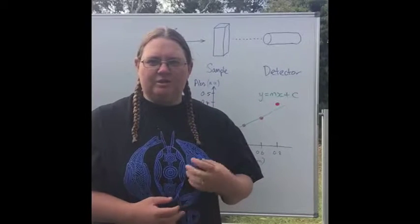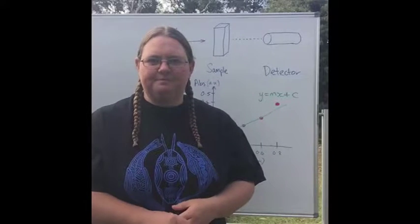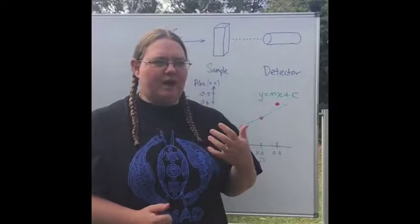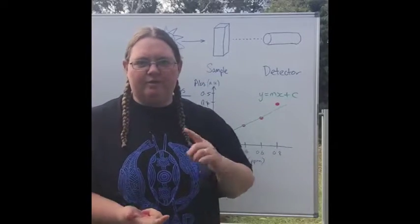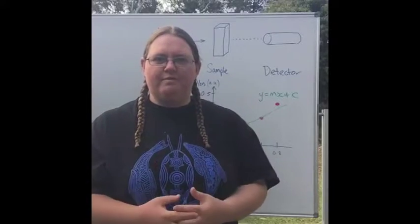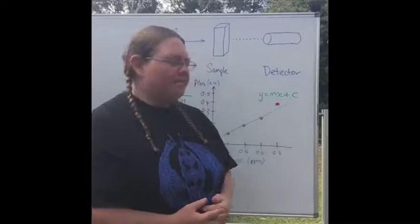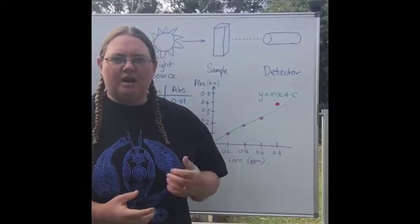When doing atomic absorption spectroscopy, we're talking about metals analysis. You could have a hollow cathode lamp light source for copper, aluminum, iron, or whatever metal you're wanting. In terms of UV-visible analysis, your light source is usually just a light bulb.